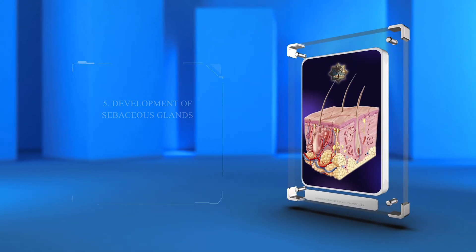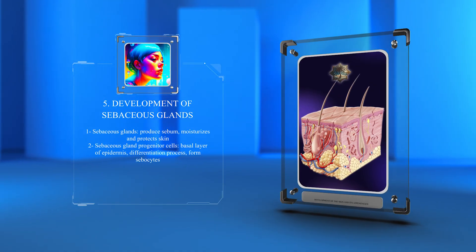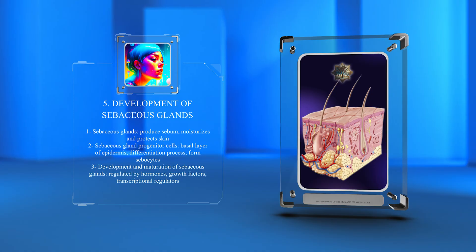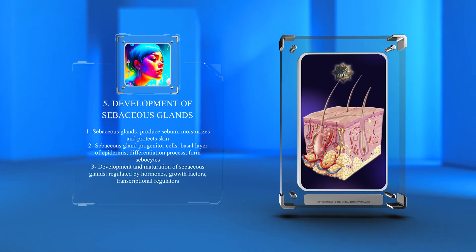Sebaceous glands are responsible for producing sebum, an oily substance that moisturizes and protects the skin. The development of sebaceous glands involves intricate cellular processes and signaling pathways.